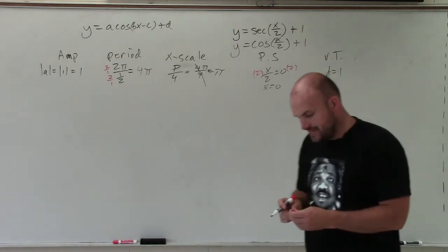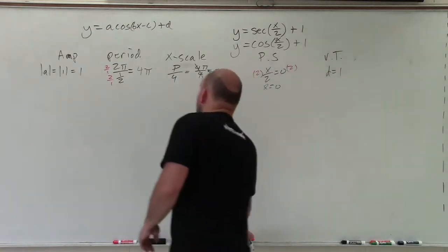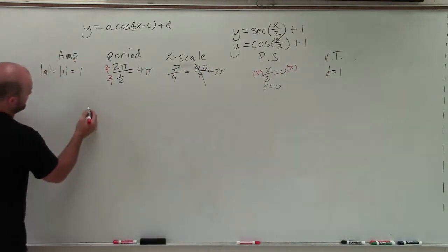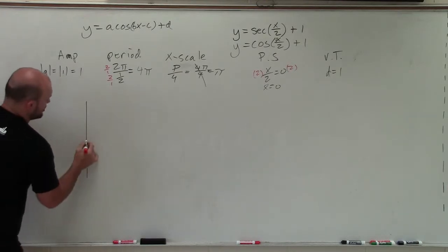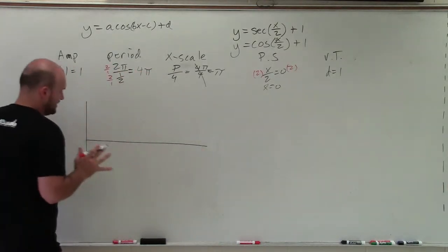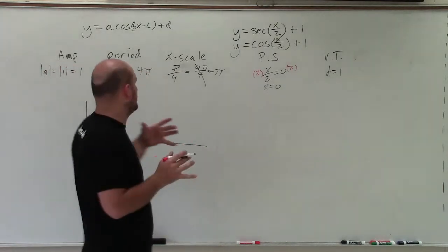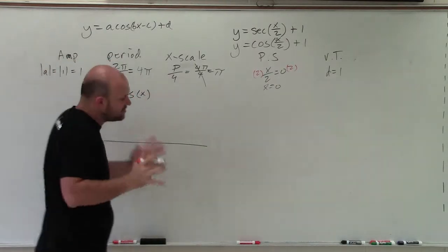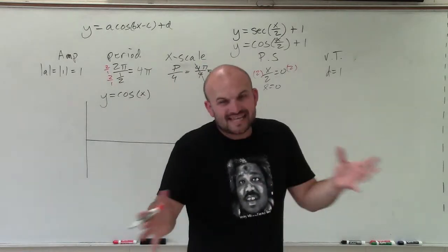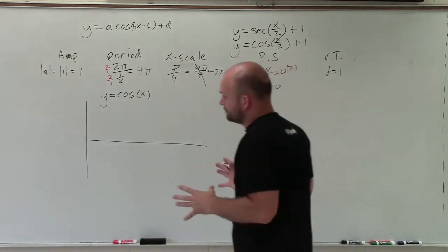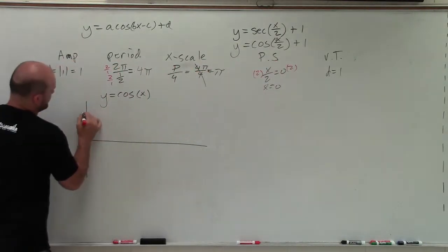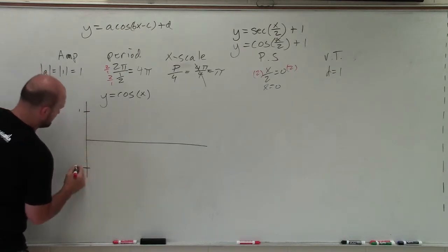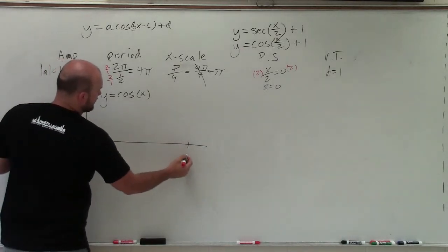OK, so to graph the cosine, before we get into secant, we've got to at least know what the parent graph looks like. So I'm going to start with my initial period. And the initial period is just graphing y equals cosine of x. And you have to know this initial period to kind of make sense of how the graph is going to look with all these different transformations. So the initial period goes up to 1, down to 1, and has a period of 2 pi.